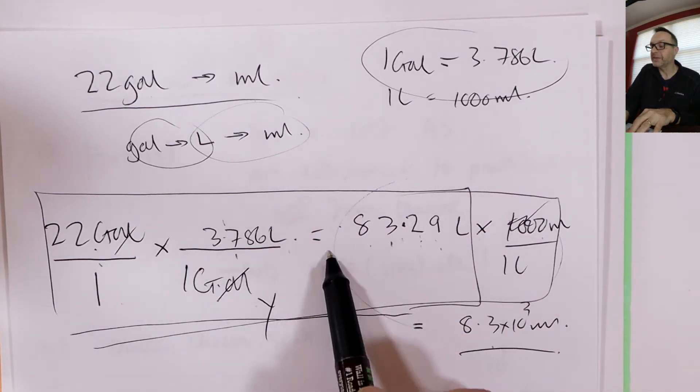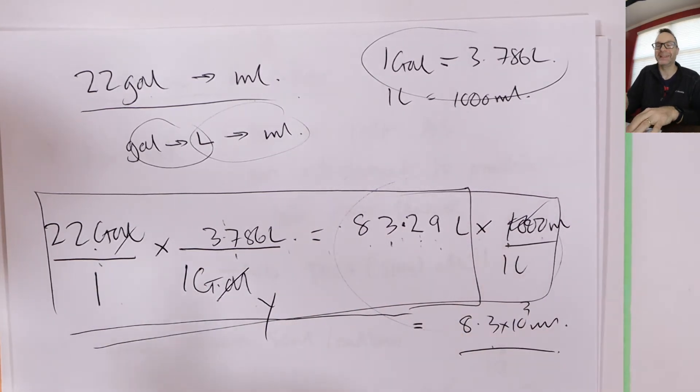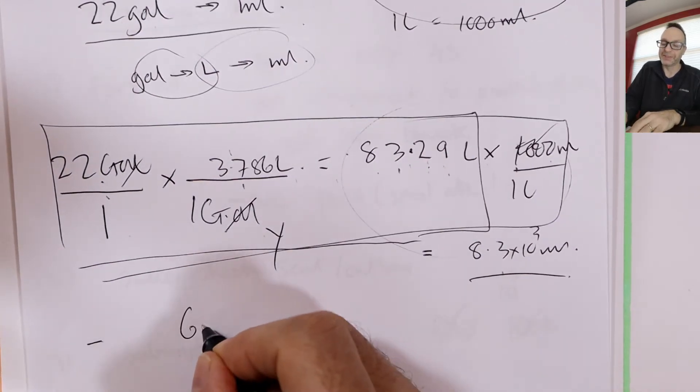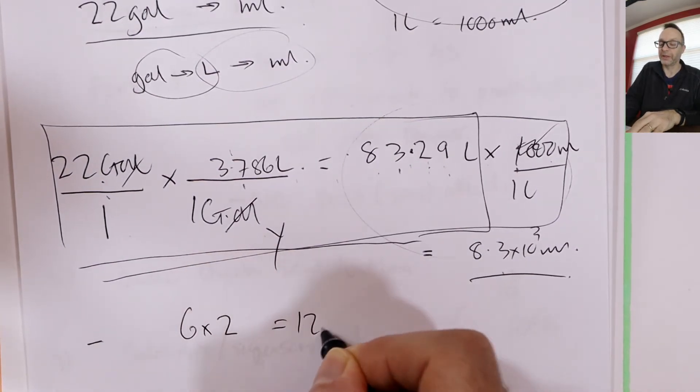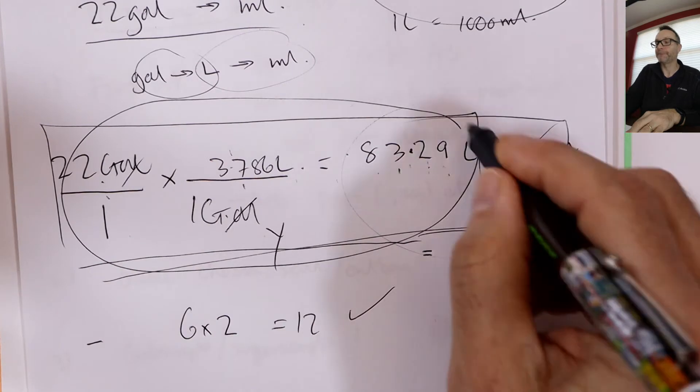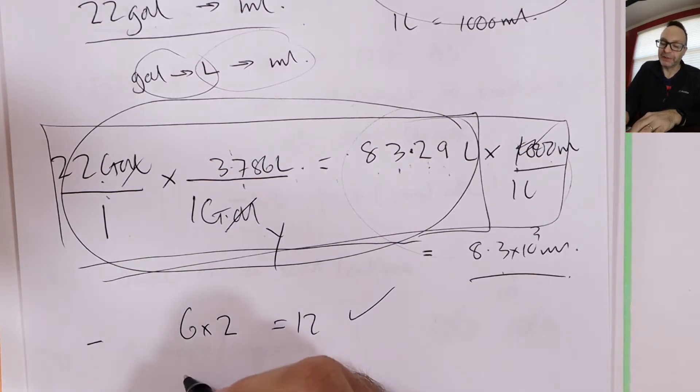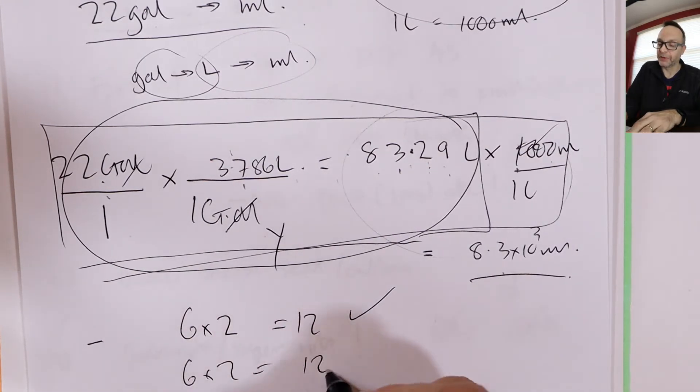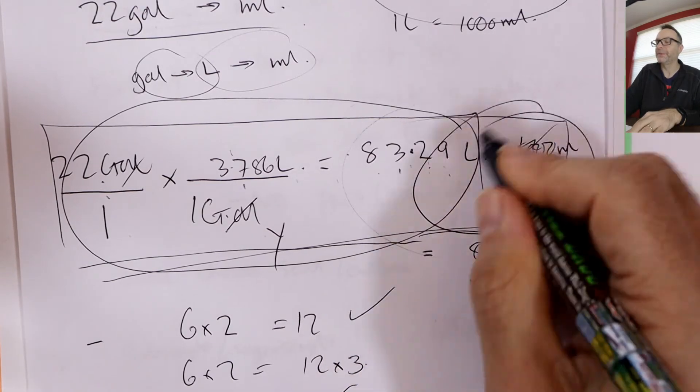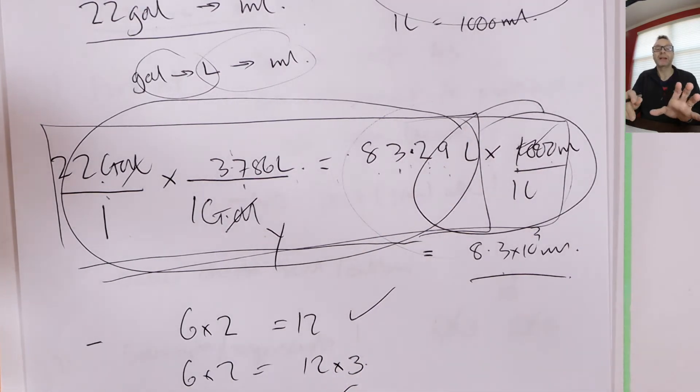But a lot of people just said, oh, this then times a thousand is the answer. No, it ain't. It's not. This times this is 83. It's not 83 times a thousand, is it? It's like this. So if I said to you, what's 6 times 2 and you told me that was 12, you'd be right. That's like this bit. But if I told you, well, 6 times 2 equals 12 times 3. Is that right? Does 12 equal 36? No, it doesn't.